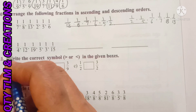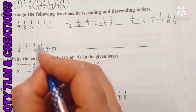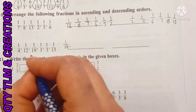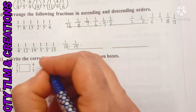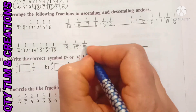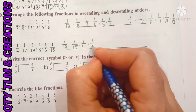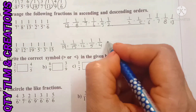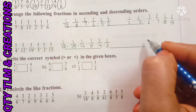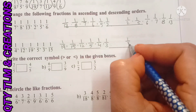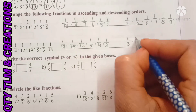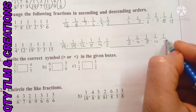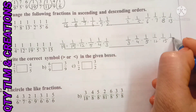Next, B: here also the biggest denominator gives the smallest fraction. So 1 by 19 is the smallest fraction. After that: 1 by 15, 1 by 12, 1 by 5, 1 by 4, and 1 by 3. Descending order is: 1 by 3, 1 by 4, 1 by 5, 1 by 12, 1 by 15, and 1 by 19.